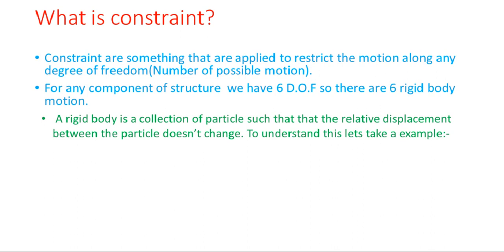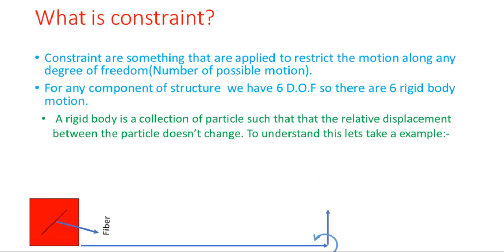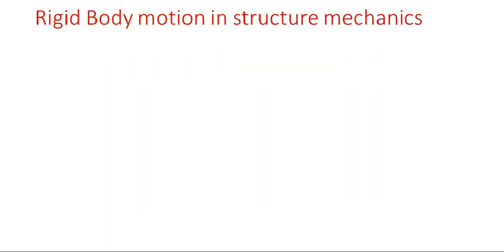For an example, let's take a body having some length and breadth — a fiber with specific length and breadth. I'm translating the body in the x direction, then in the y direction, and simultaneously providing rotation to it. Even after displacing from its original position, the fiber is the same — its length and breadth remain the same as the original. So we can say this motion is a rigid body motion.